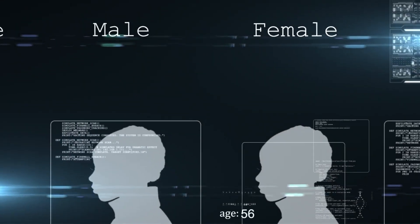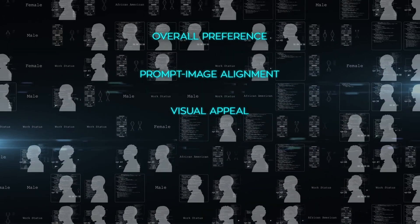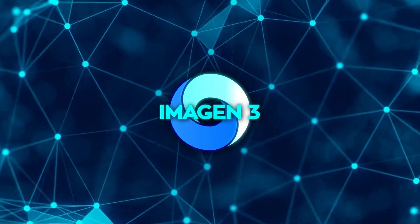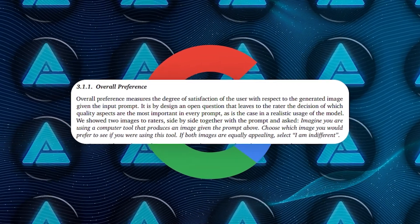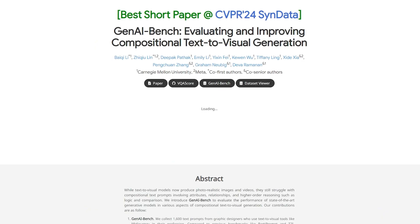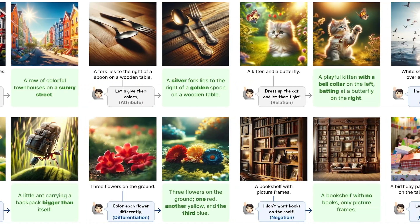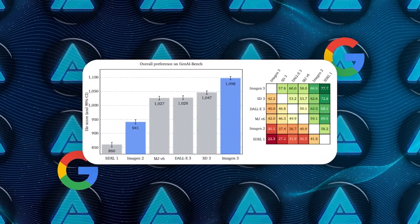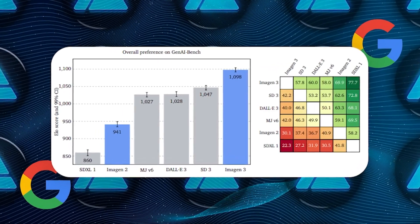In the human evaluations, they looked at a few key areas: overall preference, prompt-image alignment, visual appeal, detailed prompt-image alignment, and numerical reasoning. For overall preference, they asked people to look at images generated by different models and choose which one they liked best. They used a benchmark called GenAI Bench, which consists of 1,600 prompts collected from professional designers. On this benchmark, Imagen 3 was the clear winner — significantly preferred over the other models.